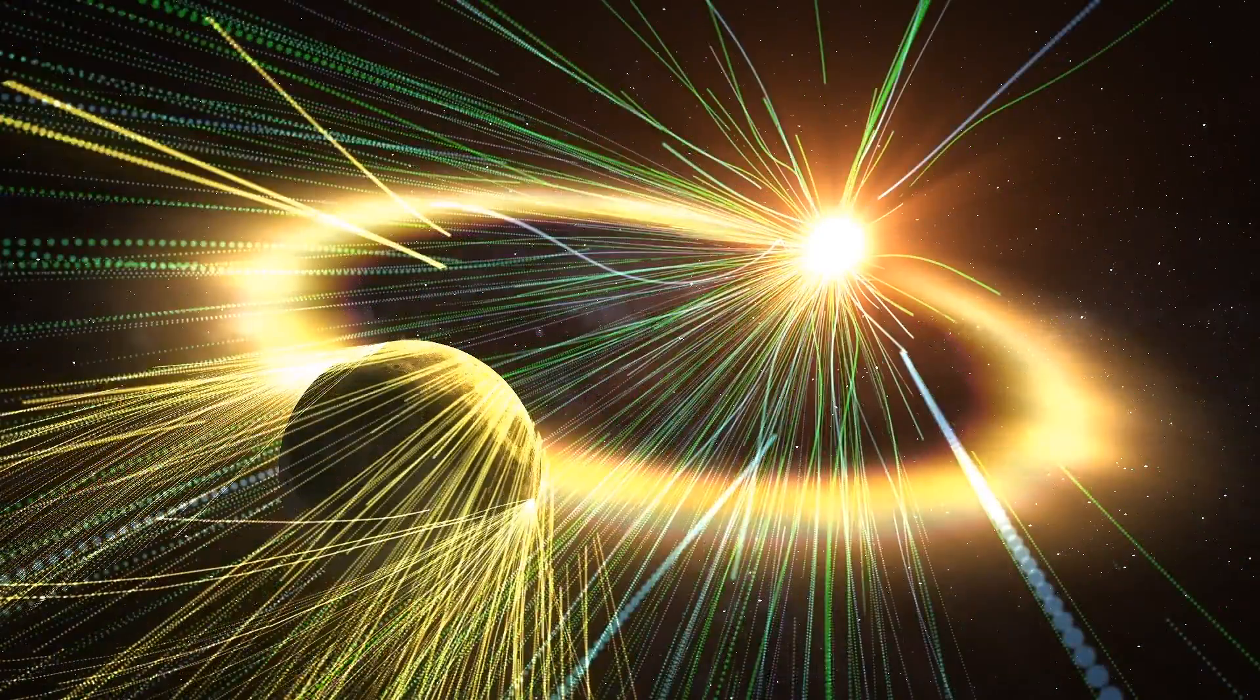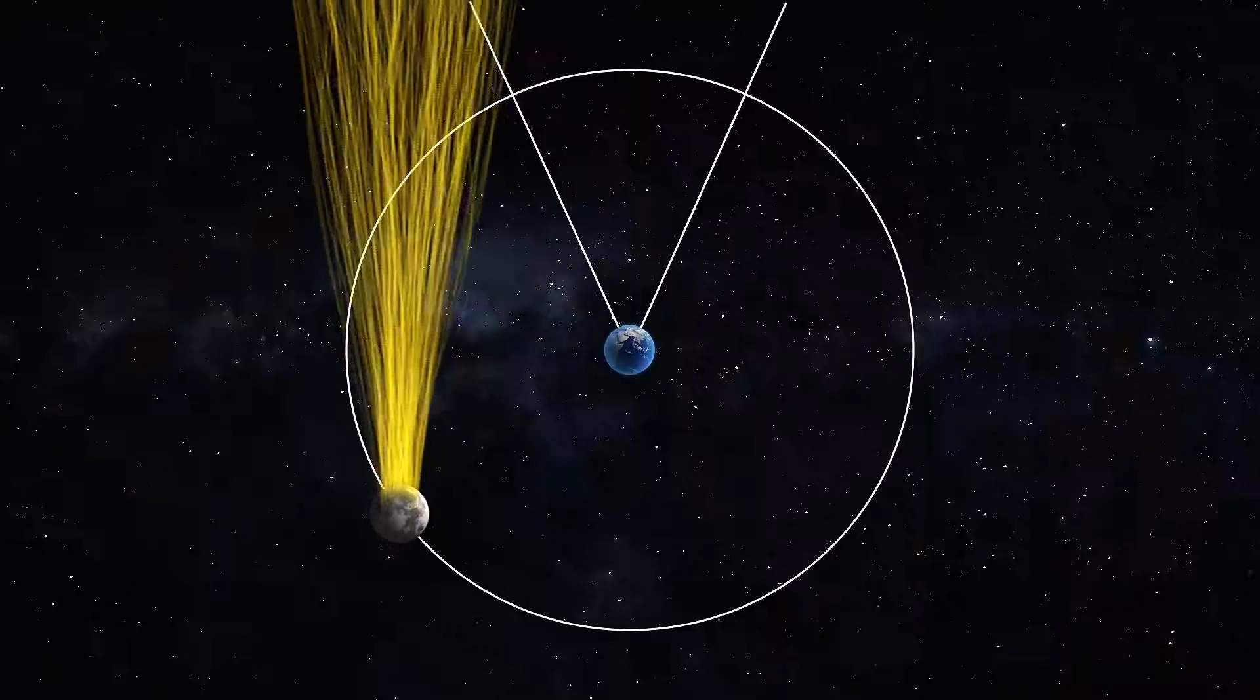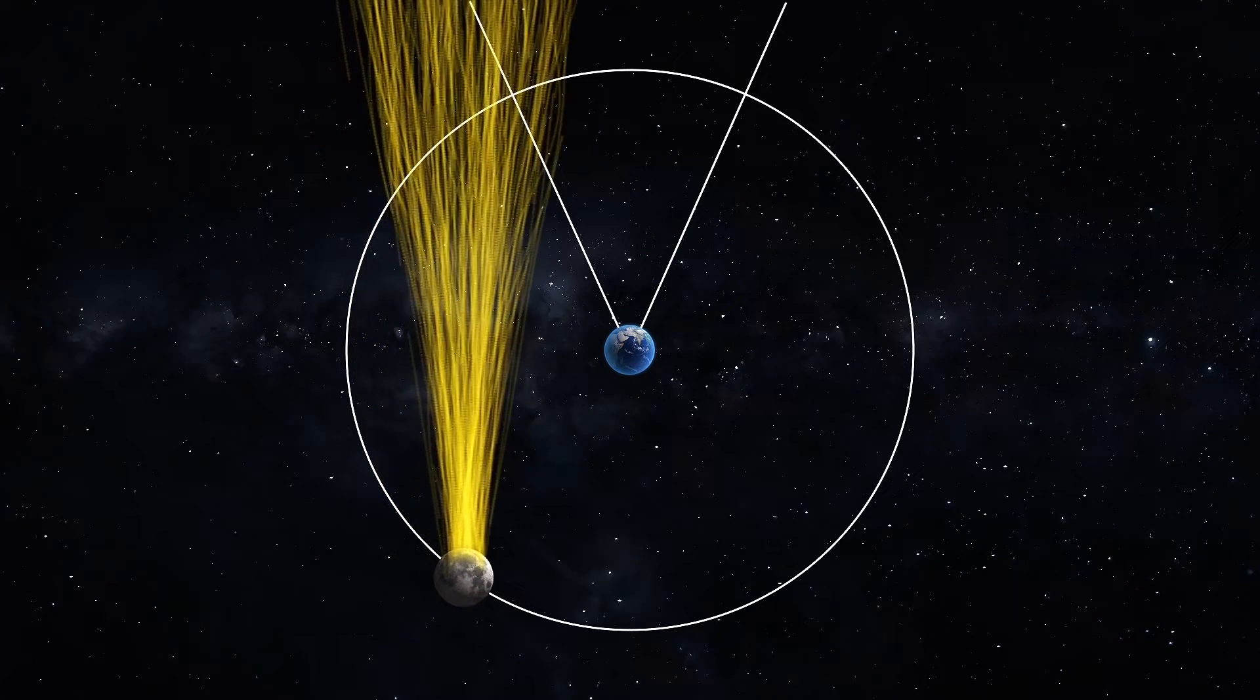Photons from the Sun collide with these atoms and push them away from the Sun. The Moon's tail streams away from the Sun, not the Earth.